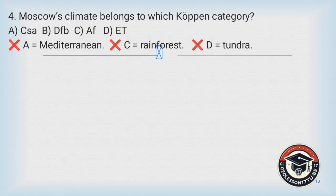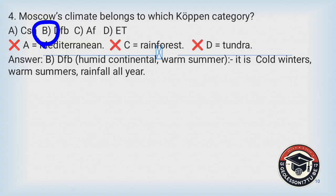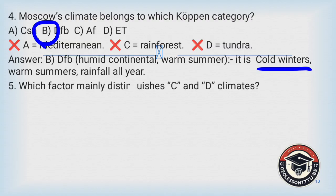'Csa' represents Mediterranean climate — not the answer. 'Af' represents equatorial or tropical rainfall areas — not correct. 'ET' represents tundra — also not the answer. The correct answer is B: 'Dfb', or humid continental warm summer. Moscow is cold during winter, warm during summer, with rainfall year-round, well-known for the Koppen classification of Dfb.